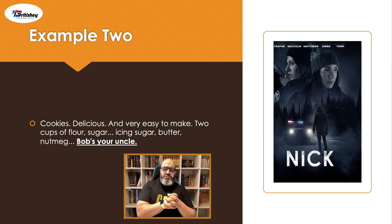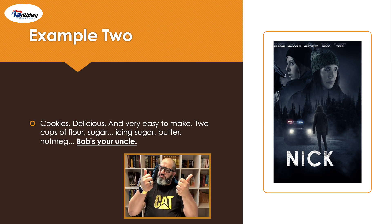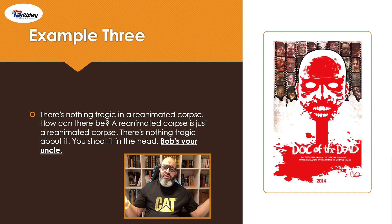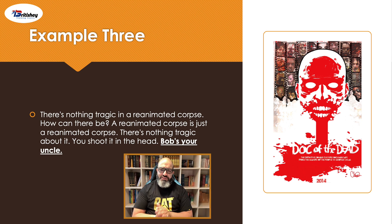Another example from the movie Nick: "Cookies — delicious and very easy to make. Two cups of flour, sugar, icing sugar, butter, nutmeg — Bob's your uncle!" And from Doc of the Dead: "There's nothing tragic about a reanimated corpse — you shoot it in the head, Bob's your uncle." Again, Bob's your uncle means very easy.